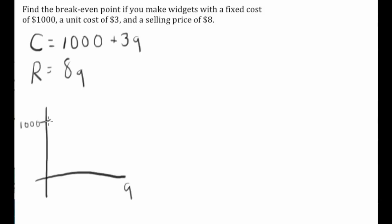C starts off at 1,000, and it's going to be a linear function going up like that. But revenue starts at zero, and it's going to have a steeper slope. So it might go up like that. And we're interested in that intersection.